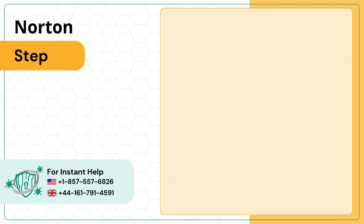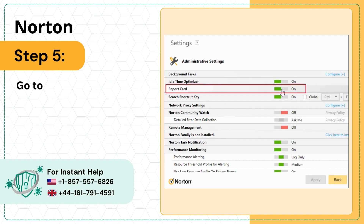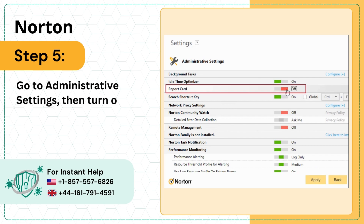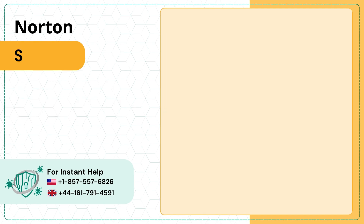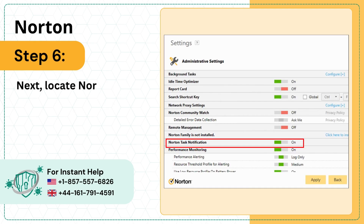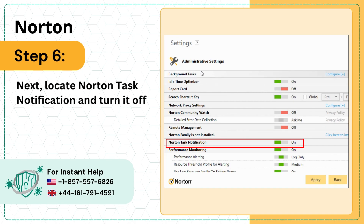Step 5: Go to Administrative Settings, then turn off Report Card. Step 6: Next, locate Norton Task Notification and turn it off by clicking on the toggle.